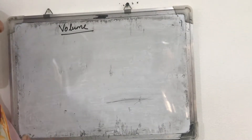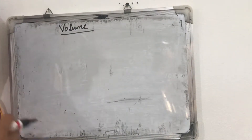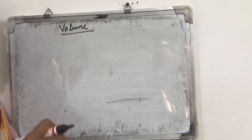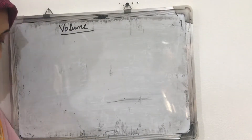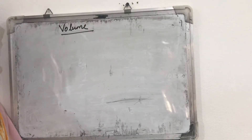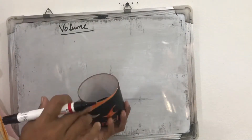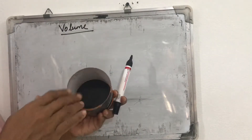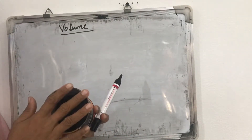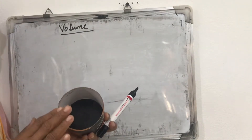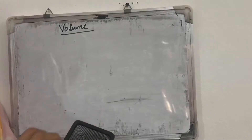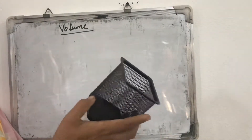What is meant by the volume of a three-dimensional shape? Volume is the amount of space occupied by a three-dimensional object. For example, if it is a cylinder, how much space is occupied inside this cylinder — that is its volume.